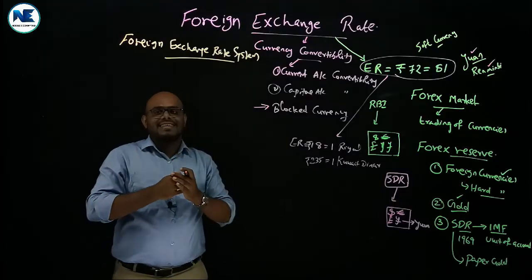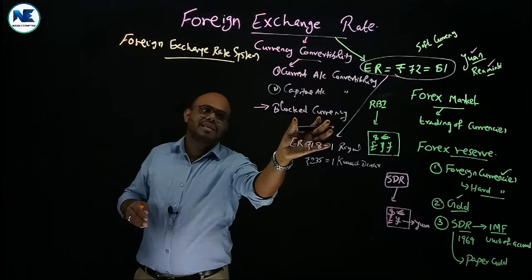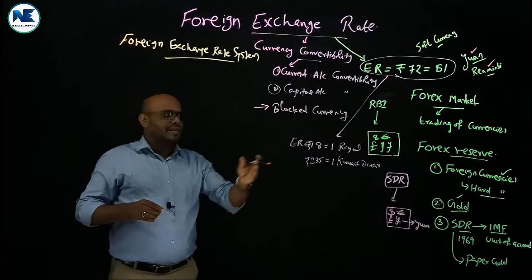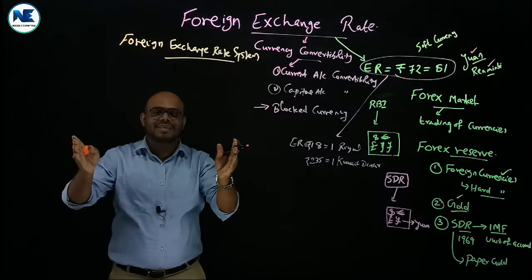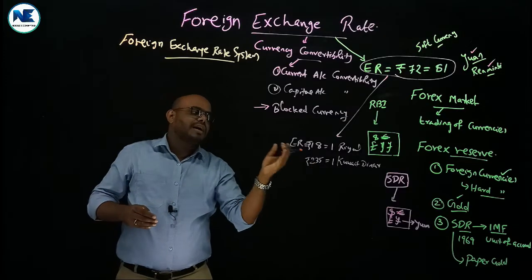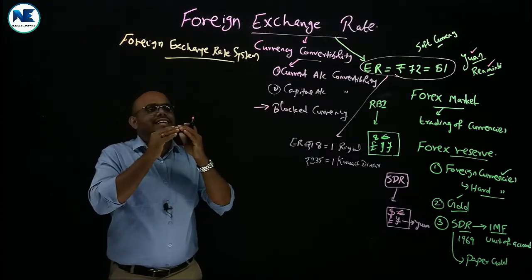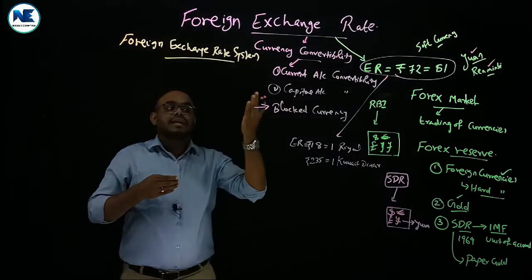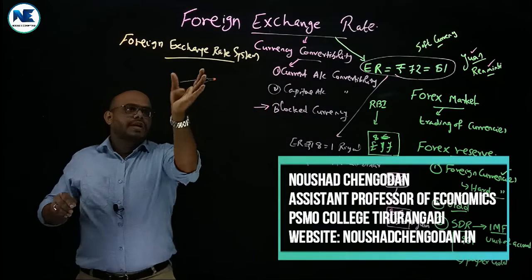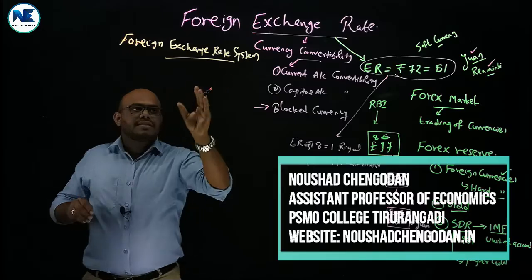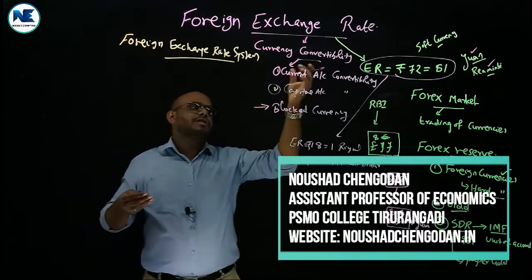Currency convertibility — whether the currency is a blocked currency or a hard currency. Hard currencies are internationally accepted currencies. A hard currency allows both current account convertibility and capital account convertibility. Foreign exchange rate system means what system we are following in the determination of the exchange rate.